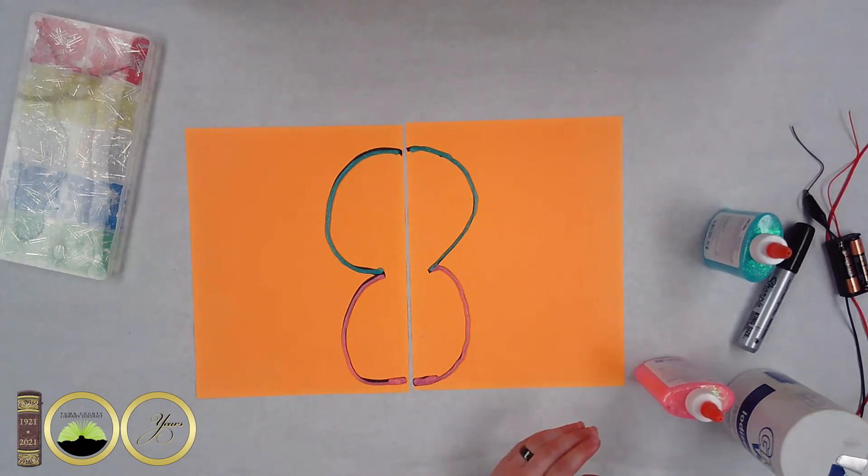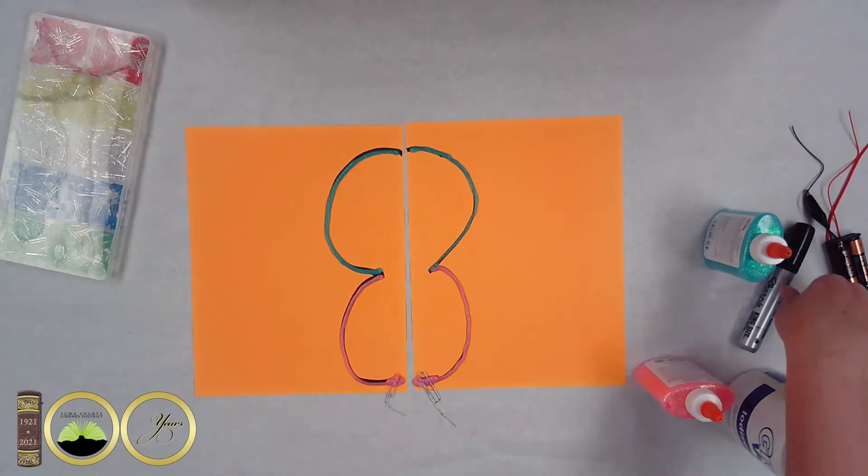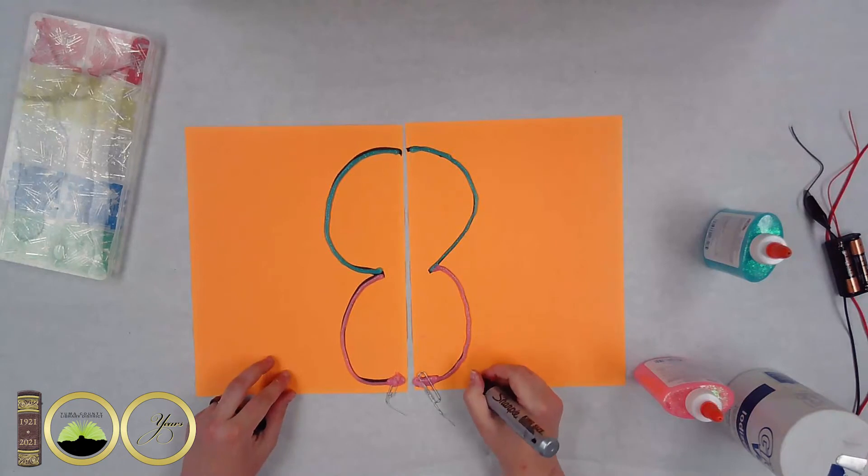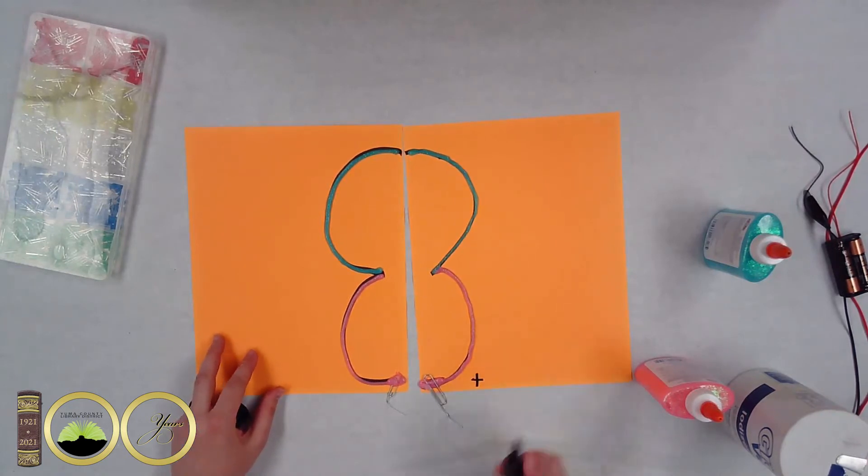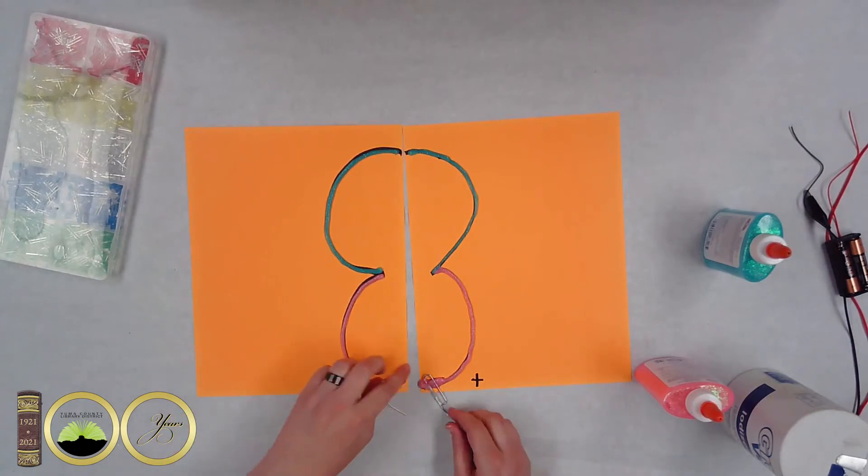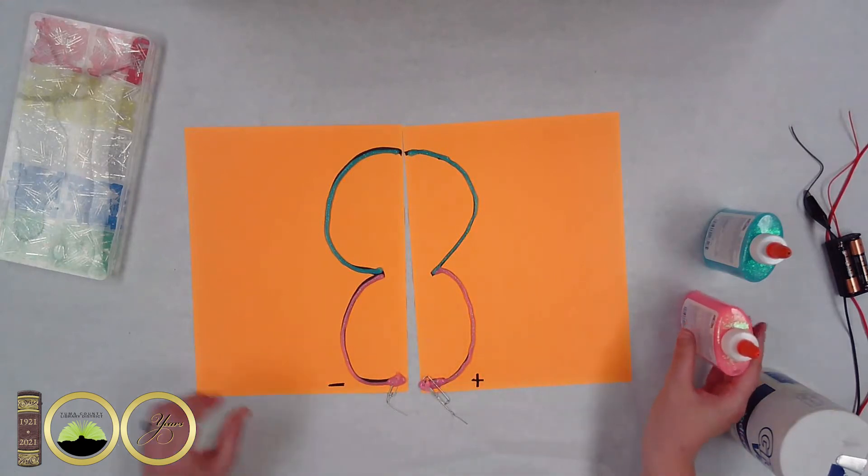Now that we've got the glue down we'll want to go ahead and take our paper clips and put them at the bottom middle. Right down there at the bottom. You'll see I'm going to take a marker and I'm going to mark the positive and negative side on there so it makes it easier to remember when you hook up the alligator clips and which way the LED light goes at the top. I'm adding just a little bit more glue on top of the paper clips to make sure that they're in there.